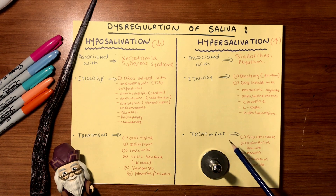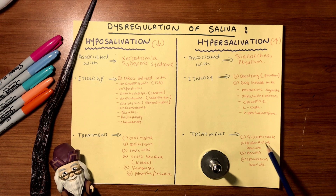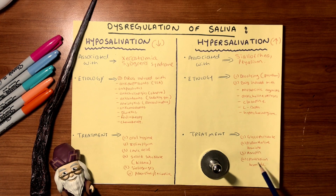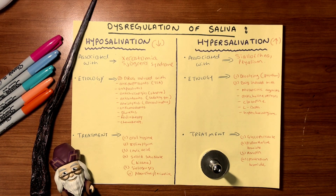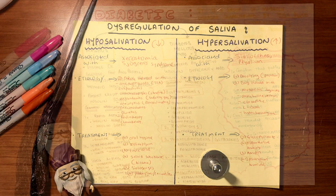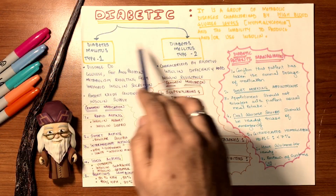Treatment for hypersalivation includes glycopyrrolate, propantheline bromide, atropine, and ipratropium bromide. Most of these are anticholinergic drugs which reduce acetylcholine action by blocking it, thereby reducing salivary flow. Now let's get on with diabetes — a very broad and very important topic.